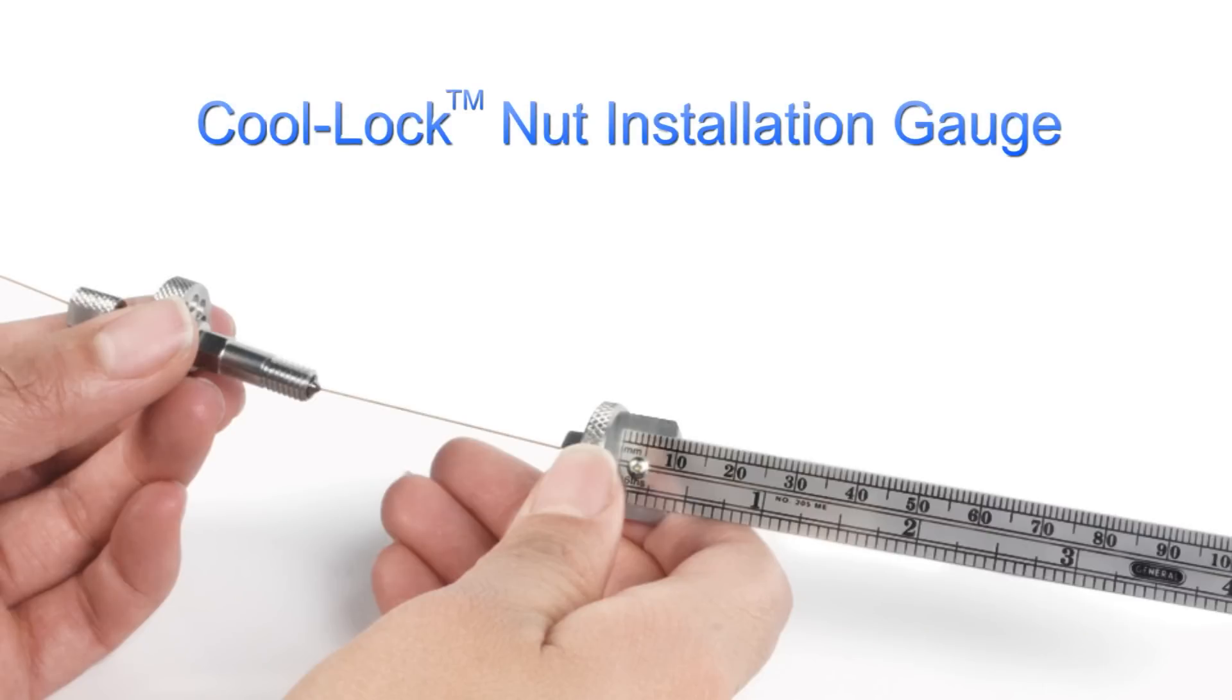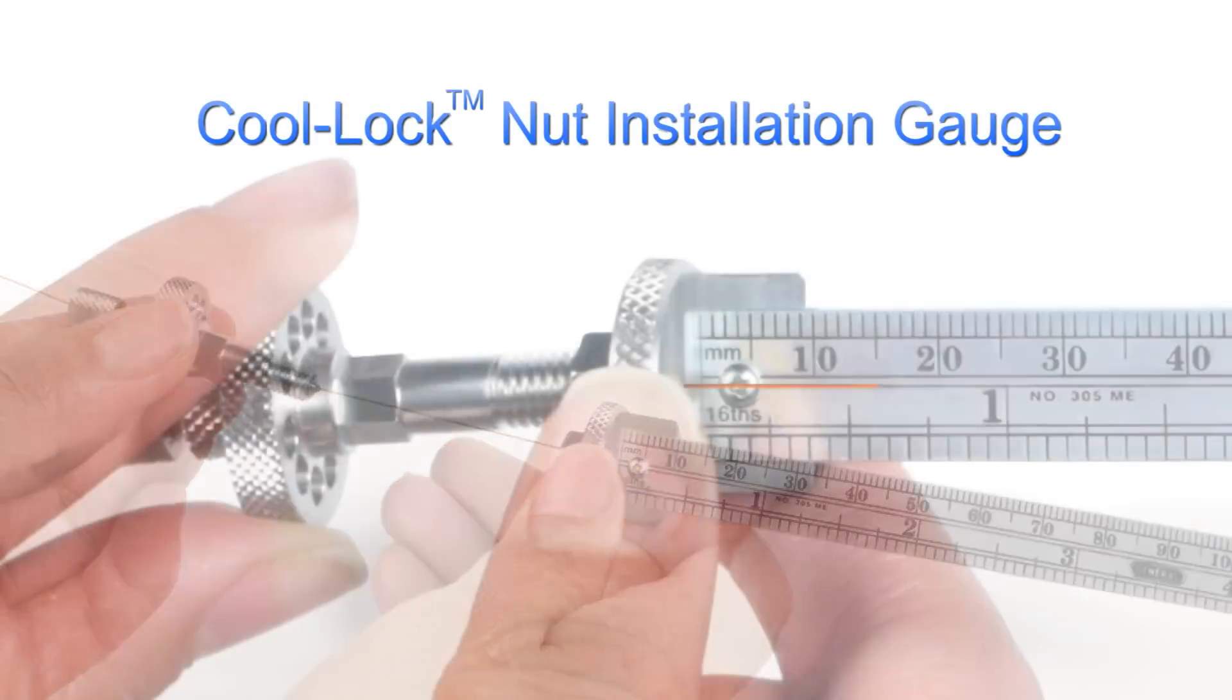For this installation, we will also use the cool lock installation gauge to increase our accuracy and help properly install the GC column at the right depth. Now that we're familiar with the parts of the cool lock nut, let's get started.